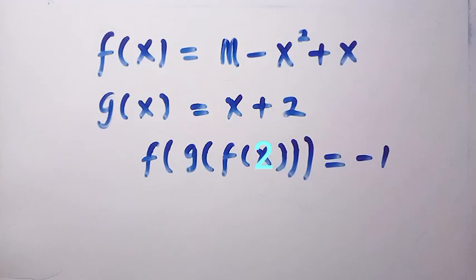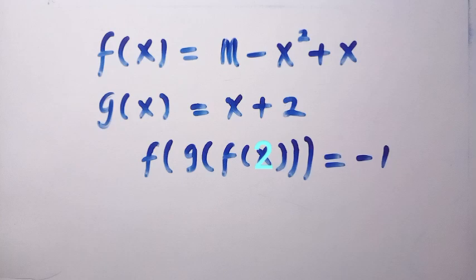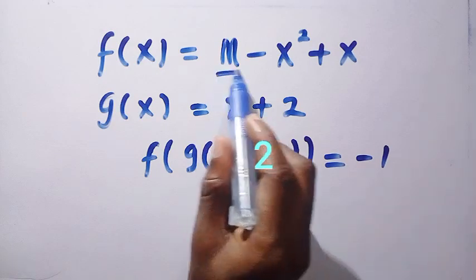We have f(x) = m - x² + x. And we also have g(x) = x + 2. And we have a composite function which follows f(g(f(x))) = -1.